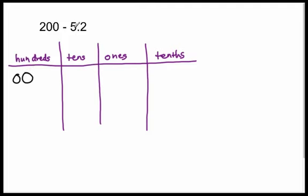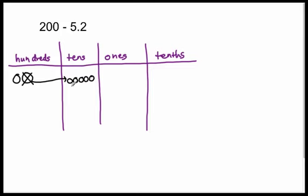These two hundreds — we're trying to subtract five ones and two tenths. Well, let's go to the tenths. Do we have any tenths? No, we do not. Do we have any ones to unbundle? No, we don't have any ones. Do we have any tens to unbundle? No, we don't. So we must unbundle a hundred. When we unbundle a hundred, that is now worth ten tens. One of any unit to the left is always worth ten of the units to the right.